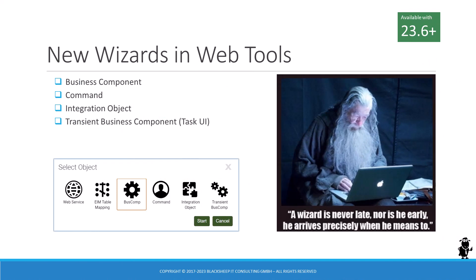The traditional Siebel Tools IDE spoils developers with more than 20 so-called new object wizards. Siebel WebTools had exactly zero wizards until 21.4, which brought the web service wizard. Earlier this year, in 23.3, the EIM table mapping wizard was added. With the 23.6 update, the number of browser-based wizards grows to a total of six, as Oracle adds wizards for creating business components, commands, integration objects, and transient business components for task-based UI to Siebel WebTools.